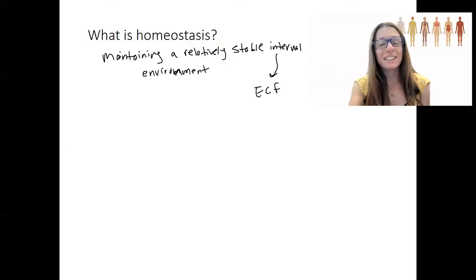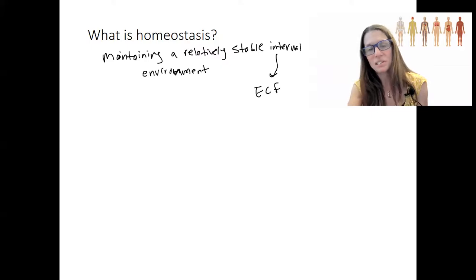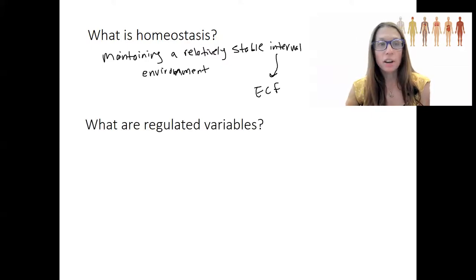So, with that in mind, let's talk about what things are regulated and what homeostasis looks like. So, regulated variables are variables, which means things that have levels to them. So, glucose, for example, that are maintained within some range, a fairly narrow range.